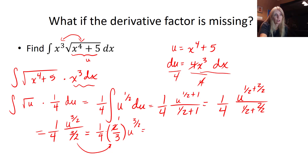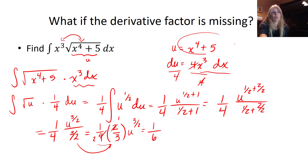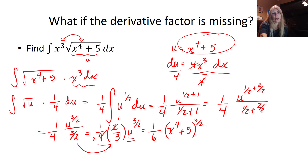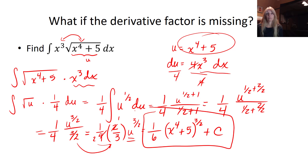When dividing by a fraction you flip and multiply. I can cancel the 2 with the 4, so two times three is six — giving me one sixth u to the three halves. Plugging u back in: u is x to the fourth plus 5, so the final answer is one sixth times (x to the fourth plus 5) to the three halves, plus C.